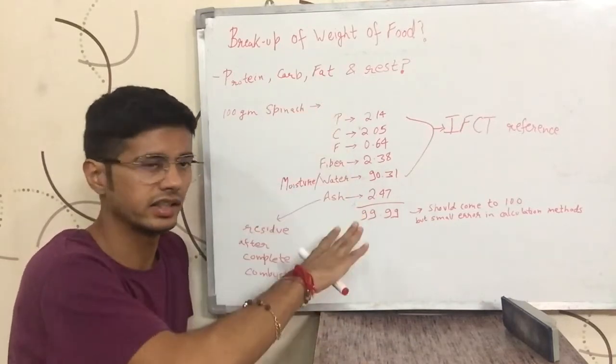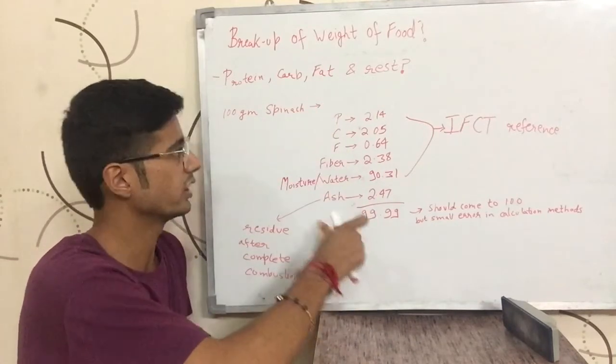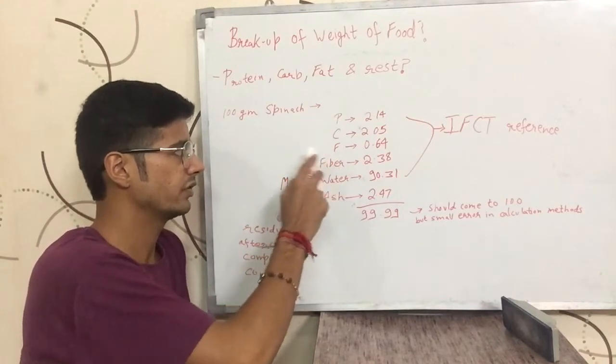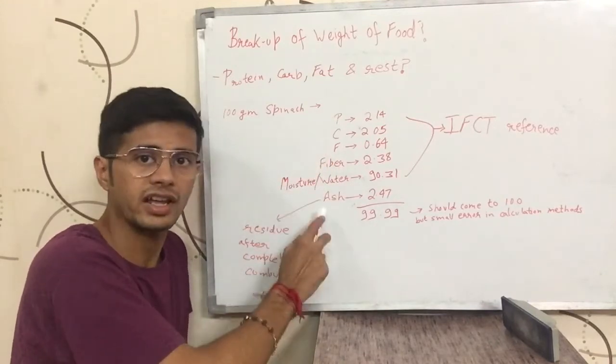You have to write down these things to get 100 grams. Protein, carbohydrate, fat, fiber, water, ash - this is how you account for the full weight.